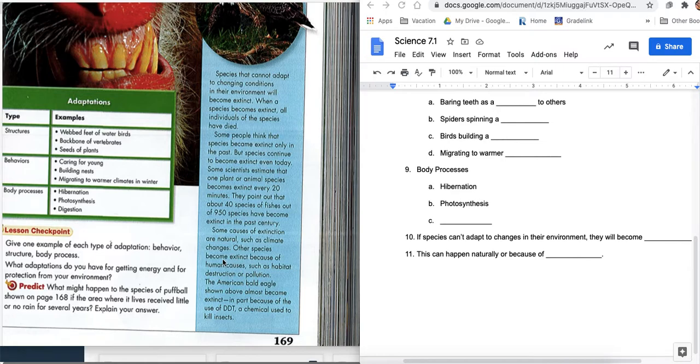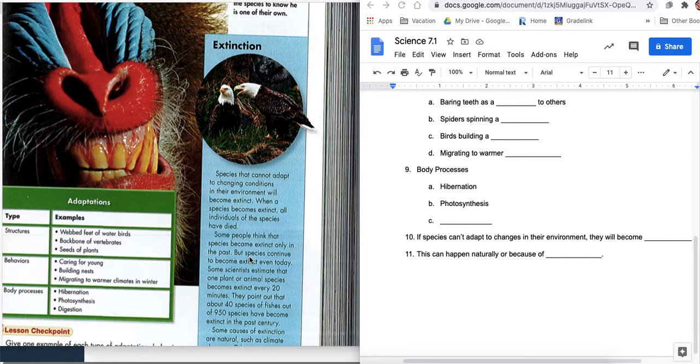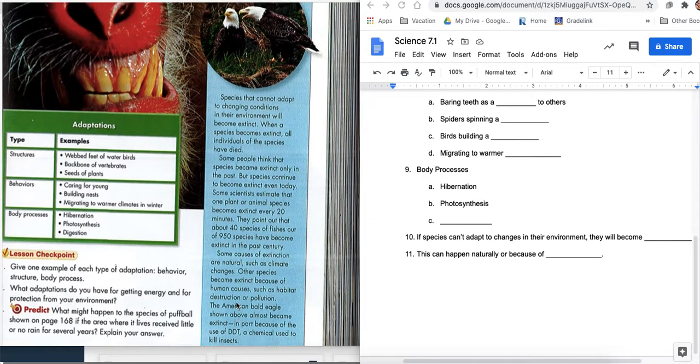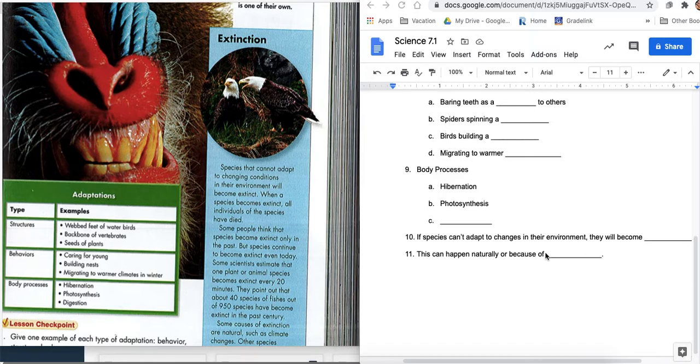What they're getting at is think about how you're impacting the environment. Some causes of extinction are natural, such as climate change. Other species become extinct because of human causes. So I wrote, this can happen naturally or because of humans. We got to be careful. We've caused a lot of the problems. Overhunting, destroying habitat, and such as habitat destruction, pollution. The American bald eagle shown above almost became extinct in part because of the use of DDT. DDT is a chemical used to kill insects. So farmers were putting DDT on their fields to kill the bugs so the bugs wouldn't eat their crops. That insecticide eventually got in the water. The water then affected the fish. The eagles ate the fish and it had a huge impact on the eagles. We'll talk about this in a couple lessons on how this killed the eagles off. But today we've now learned that and we've banned DDT so that the eagles are doing better and thriving. But we need to be careful with those things.